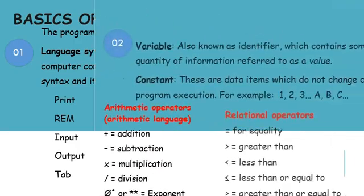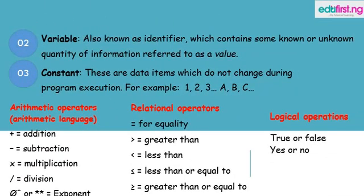Another basic is a variable — also known as an identifier — which contains some known or unknown quantity of information referred to as a value. Another basic of programming is a constant. Constants are data items which do not change during program execution.